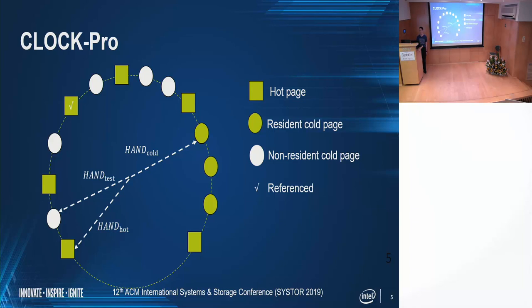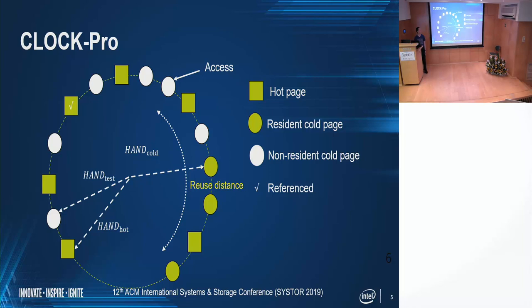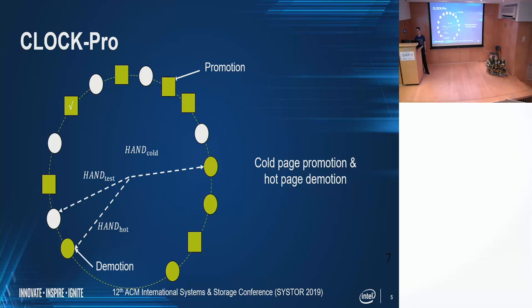In CLOCK-Pro, there are three types of cache entries and three hands pointing to the LRU entries. A newly incoming page is tagged as a resident cold page. We use the hand cold to evict the LRU cold page. After the page gets evicted, it becomes a non-resident cold page, which is a shadow cache entry with the metadata kept but the data content discarded. So when there is an access to a resident cold page or non-resident cold page in its test period, we see a smaller reuse distance versus that of the LRU hot page. This will trigger a promotion of the cold page to hot status and the demotion of the LRU hot page to cold status, along with the page move.